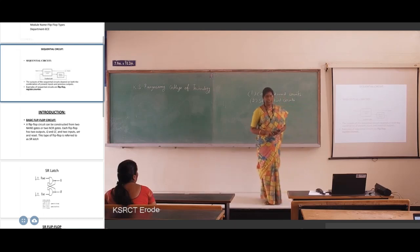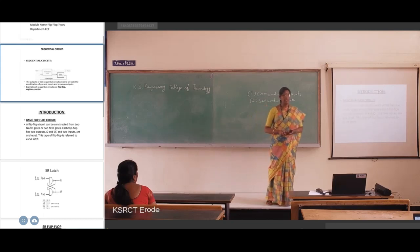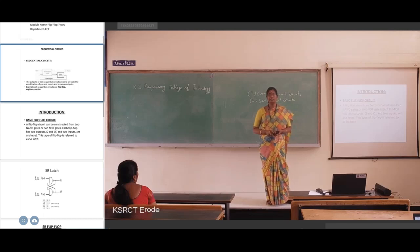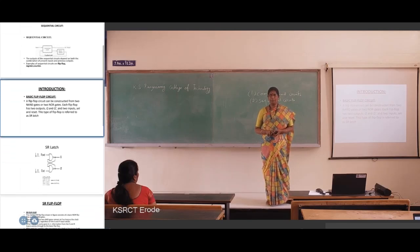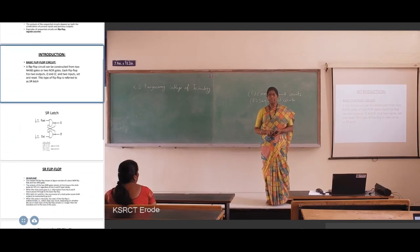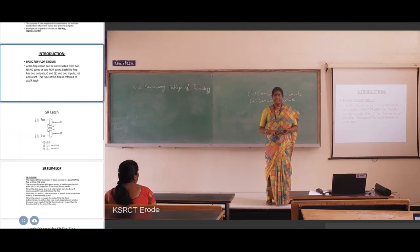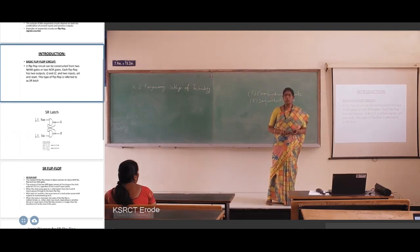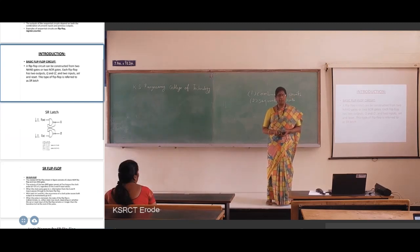We have four types of flip-flops: the first one is SR flip-flop, the second one is D flip-flop, the third one is JK flip-flop, and the fourth one is T flip-flop. There are some disadvantages of JK flip-flops, and to overcome those disadvantages we go for the Master-Slave flip-flop.